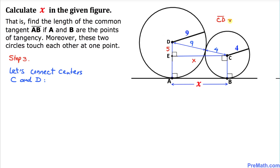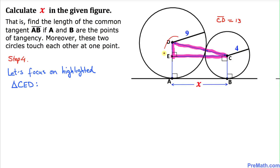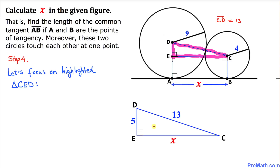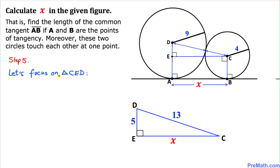Now let's focus on the highlighted right triangle CED. This triangle, shown separately, has side CE equal to x units, side ED equal to 5 units, and the hypotenuse CD equal to 13 units. Since it's a right triangle, we will use the Pythagorean theorem.